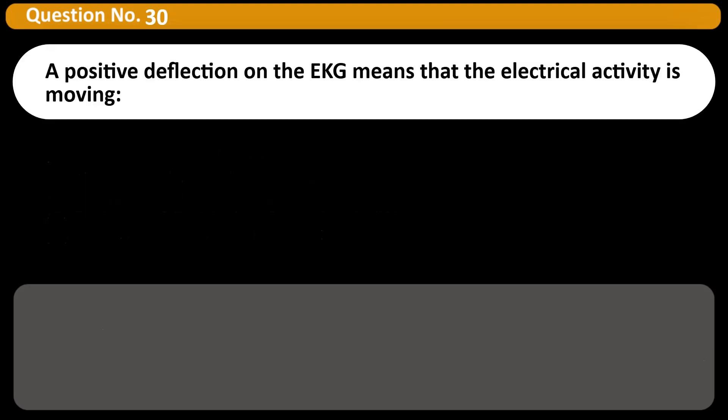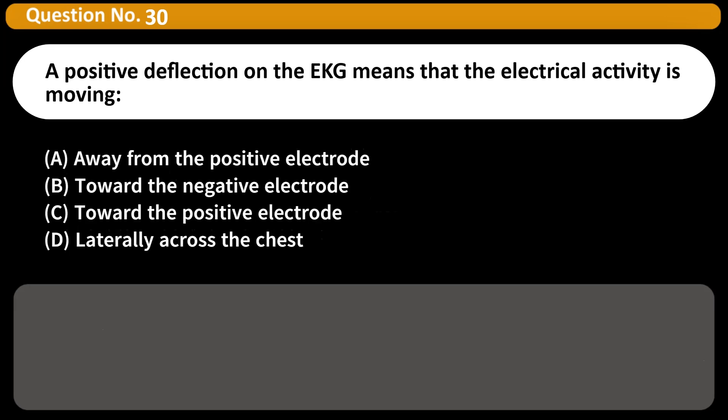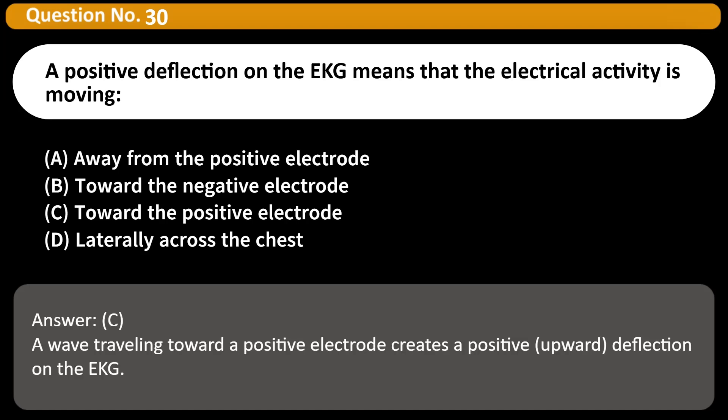A positive deflection on the EKG means that the electrical activity is moving A. Away from the positive electrode B. Toward the negative electrode C. Toward the positive electrode D. Laterally across the chest Answer C. A wave traveling toward a positive electrode creates a positive, upward, deflection on the EKG.